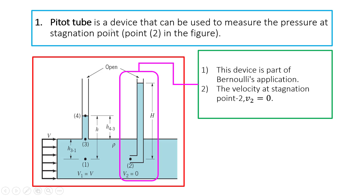So first of all, let's look at what is a Pitot tube. A Pitot tube is a device that can be used to measure the pressure at the stagnation point. The tube inside the pink highlighted area — the one with the L-shape here — is the Pitot tube. The velocity at point 2, at the tip of the Pitot tube, V2 is equal to 0.